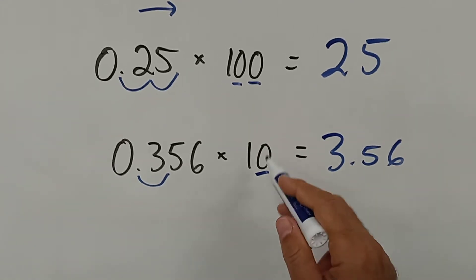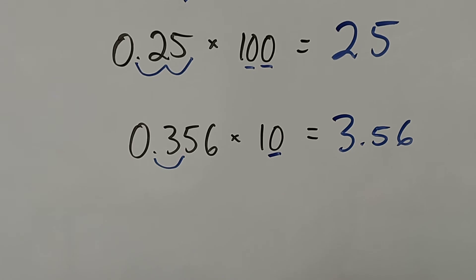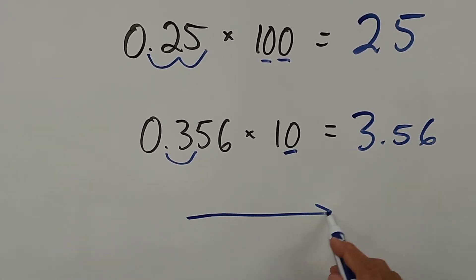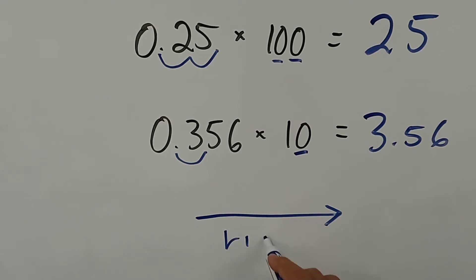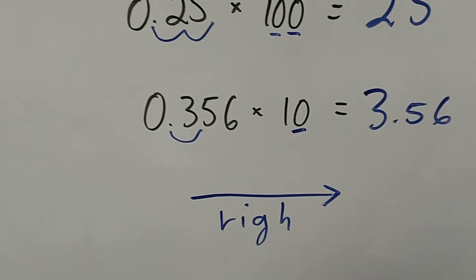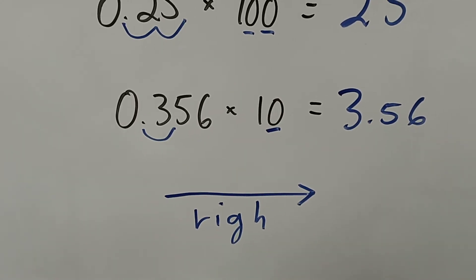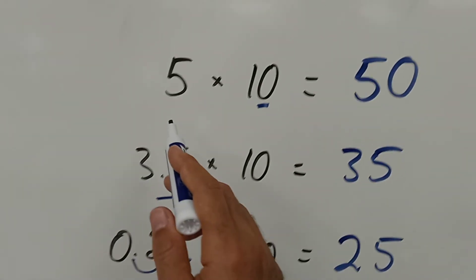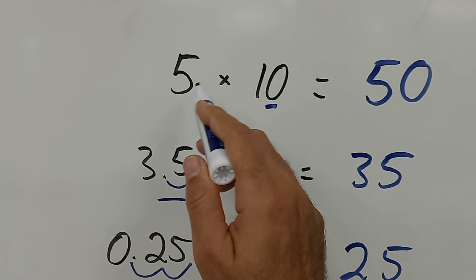So whenever you multiply by 10, 100, 1000, and so on with just zeros, you move the decimal point to the right. If it's a decimal, you move to the right. If the number is a whole number like 5, you just add the zeros on the right. That's it.